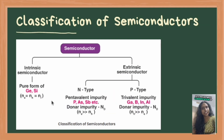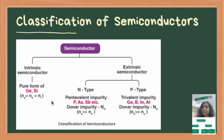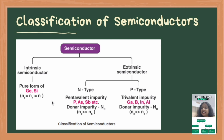Let's discuss the classification of semiconductors. Semiconductors can be classified as intrinsic and extrinsic semiconductors. Intrinsic semiconductors are pure semiconductors like silicon or germanium with no impurities, and in these, conductivity increases with temperature as electrons gain enough energy to jump from the valence band to the conduction band. Extrinsic semiconductors are doped semiconductors with impurities added to improve conductivity. Doping is the process of adding impurity atoms to a semiconductor to increase its conductivity.